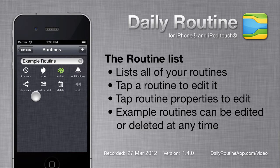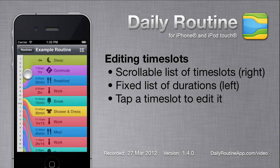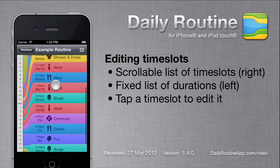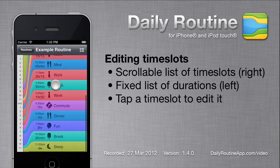Routines have many editable properties, such as name and icon, but the most important is time slots. The time slots list has two parts: a scrollable list of time slots on the right, and the relative duration of those time slots on the left.